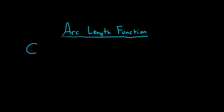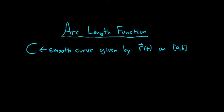So, here's the idea. We have C, and this is a smooth curve given by a vector-valued function r(t) on some interval [a,b]. So, t runs from a to b.